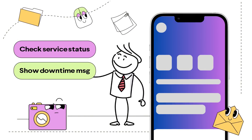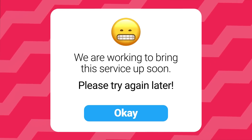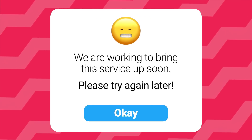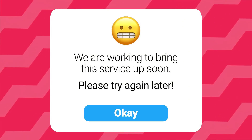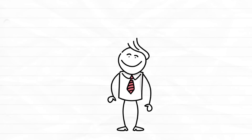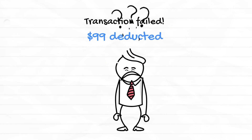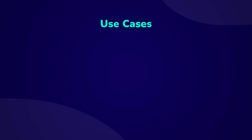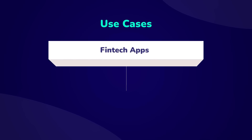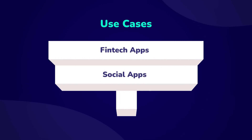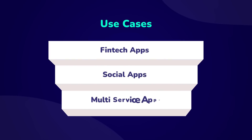If the service is not working, you can show a nice message that the service is down for a certain period and will be available at a specific time. This really helps users understand the situation and prevents frustration from error messages and failed transactions. This kind of implementation is especially essential for finance and service-based applications that have many services within a single app.